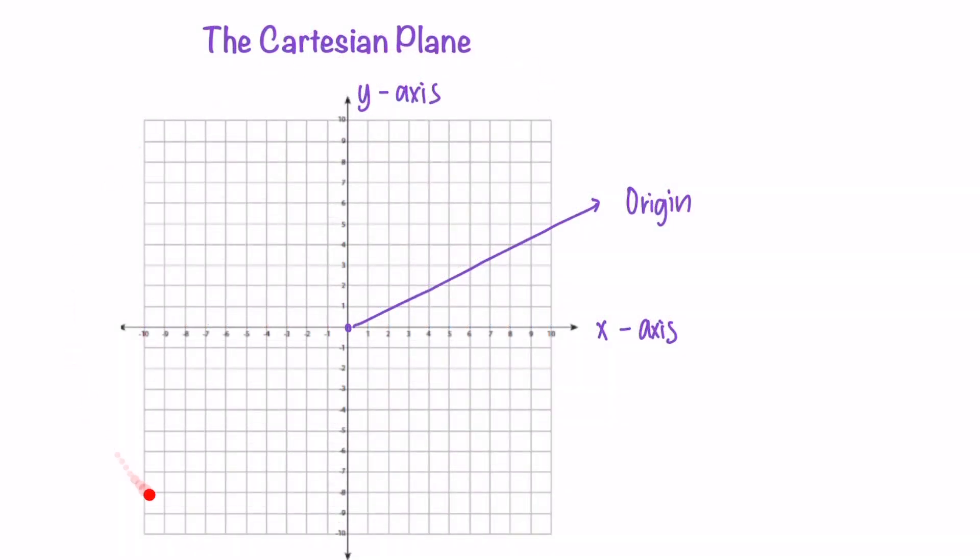The Cartesian plane is divided by the x and y-axis. As you can see, the plane is divided into four regions. These four regions are referred to as quadrants.